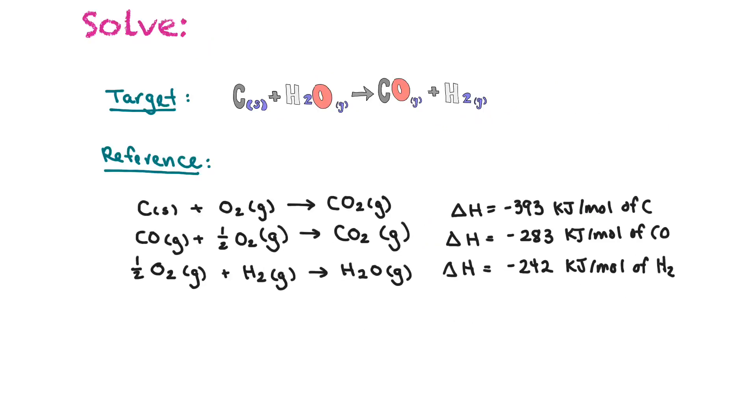So now we need to plan our action. So the first thing is, the first reaction, we have carbon as a reactant, and we have some other parts that we don't need, but we can get rid of those with some of our other actions. So we're going to keep this as is.